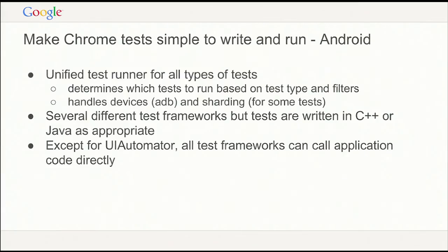For Android specifically, we have a very large list of different test frameworks. So we have one unified test runner for all the different test types — not a different runner per test type, but the same test runner for everything. The test runner determines which tests to run based on type, and for Java tests you can filter by feature. The test runner also handles anything with the devices — ADB communications, sharding, and any flakiness issues.